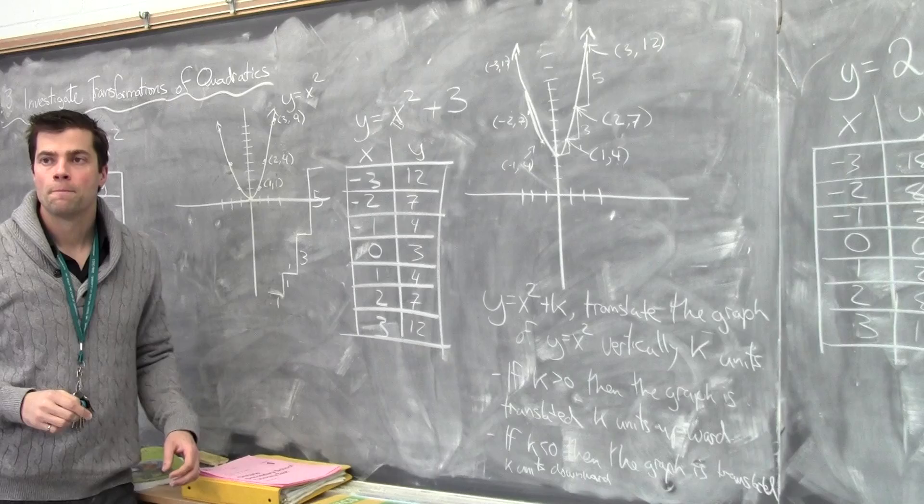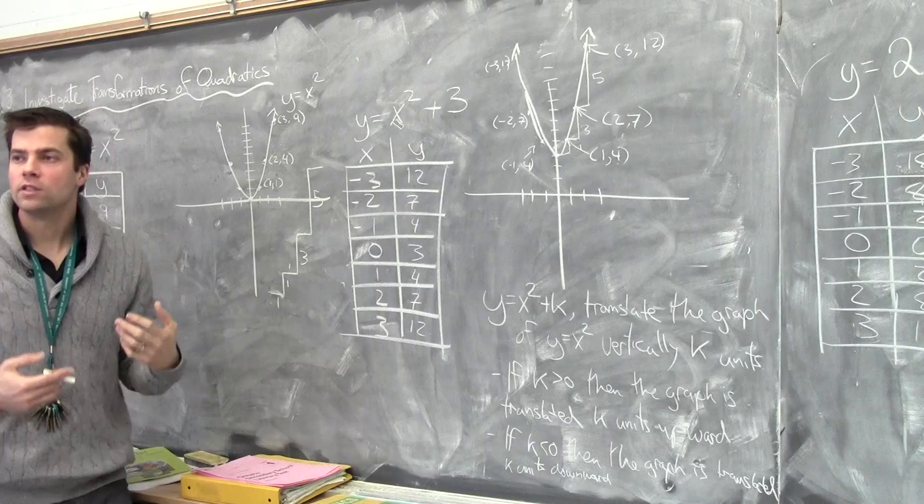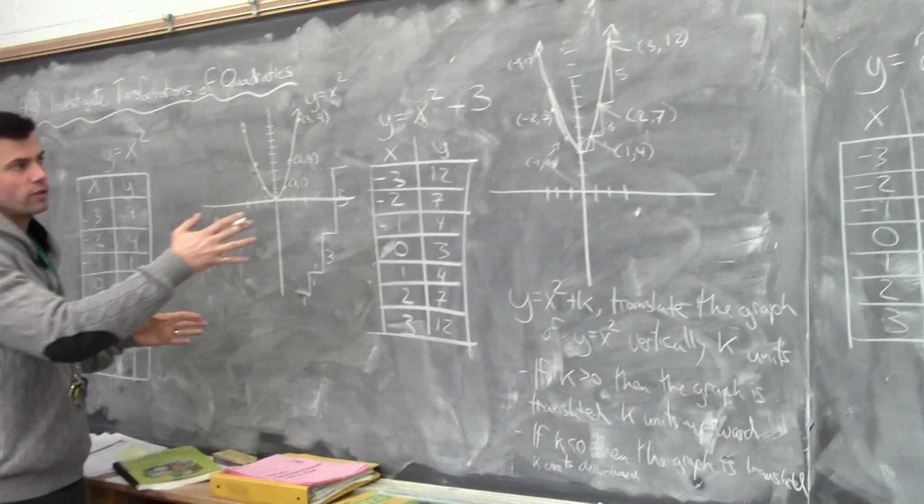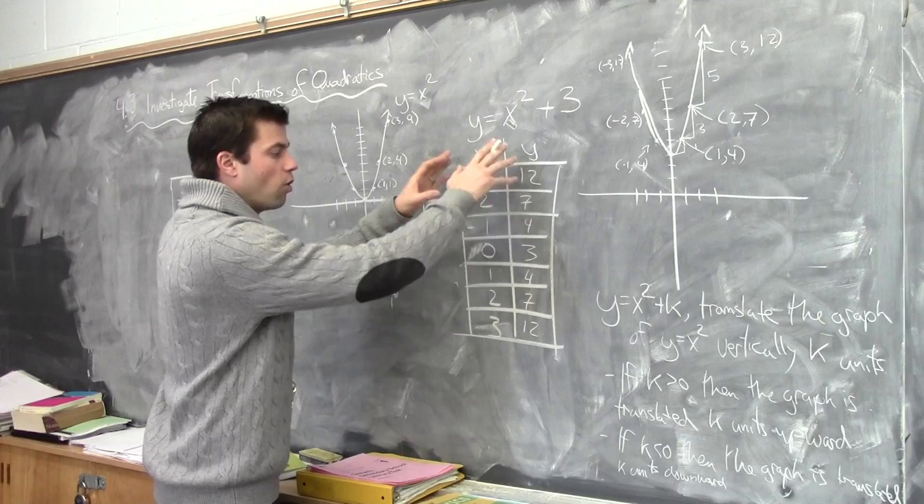So that step pattern 1, 3, 5 — if you can remember that — is a shortcut. I'm teaching it a little bit in advance; it's not in the textbook yet but it will help you move forward. If you're uncomfortable with the step pattern, you can always do a table of values and get the same answer.